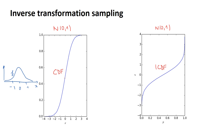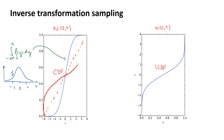To get the ICDF from the CDF, you apply the standard inverse method from calculus — you draw a line and do mirror imaging. As you can see, this line maps exactly to that line. Now let's proceed to the sampling: first we generate some uniformly distributed numbers to use as inputs to the ICDF.